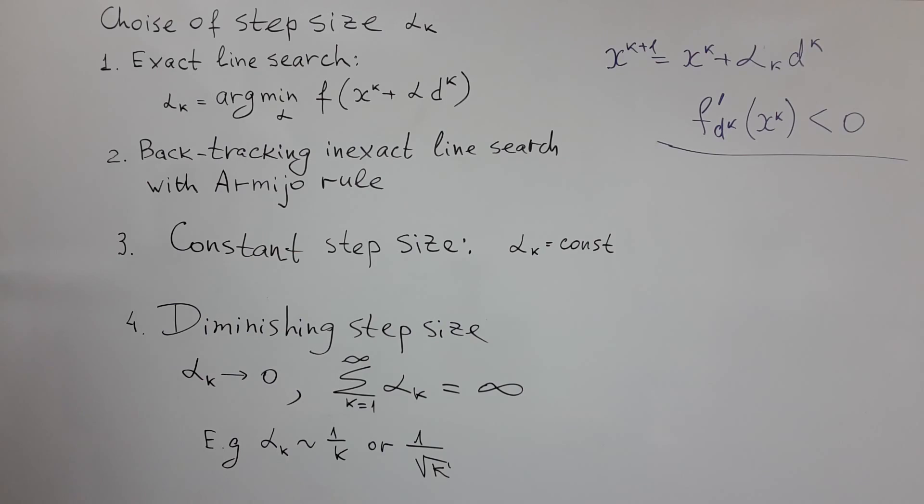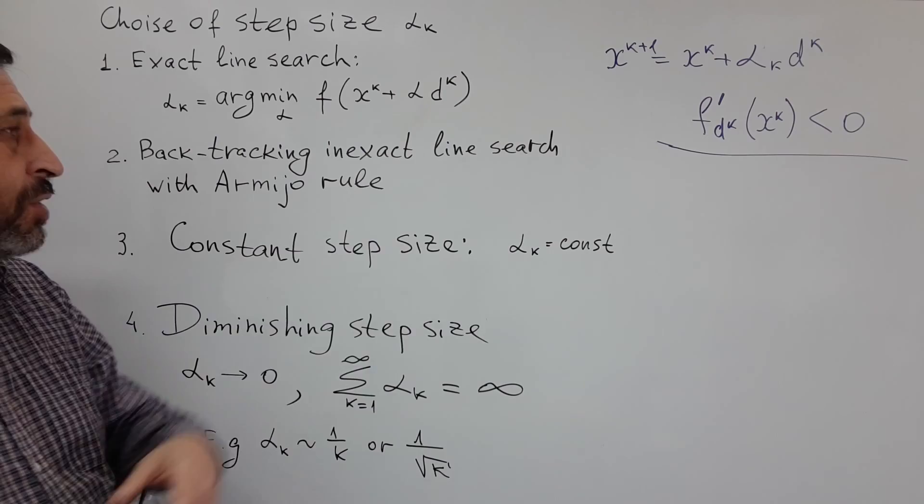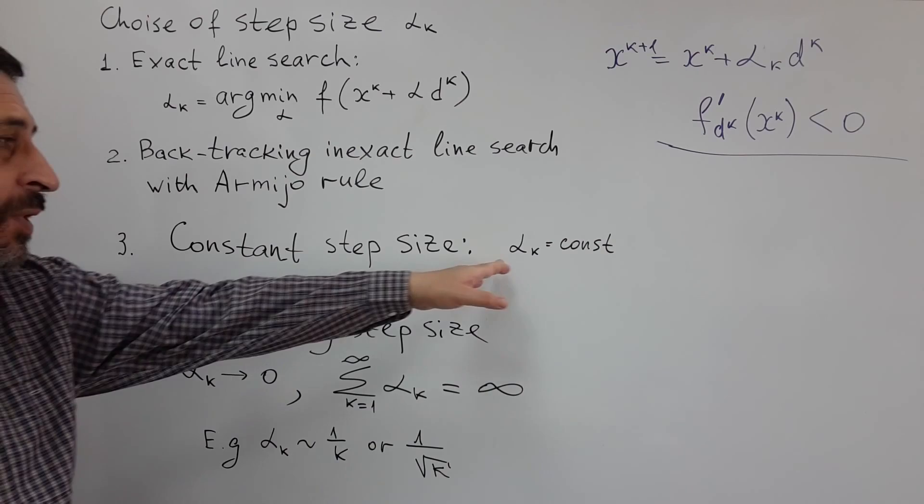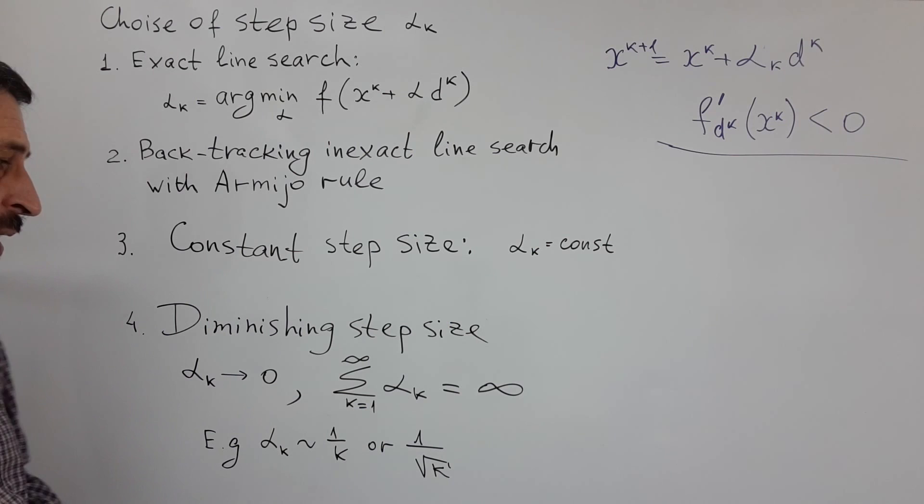Other possibilities are constant step size. Quite often or sometimes we have no access to function value. So, we may need to decide in advance about some safe small enough step size.